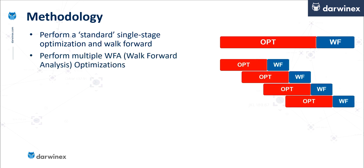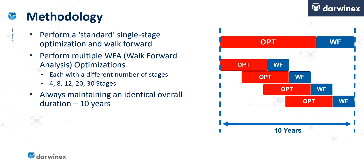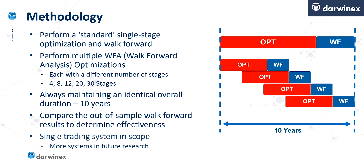Following this, a number of walk-forward analysis optimizations were undertaken, each of them with a different number of stages. So the first one, like the one you see in the diagram here with four stages, was the first. I also conducted walk-forward analysis for eight stages, 12, 20, and 30. However, regardless of the number of stages, the optimizations were always undertaken over an identical duration of 10 years. And then the effectiveness of all of these was compared by looking at the out-of-sample walk-forward results. For this first phase of the research, a single trading system was used to obtain the results.